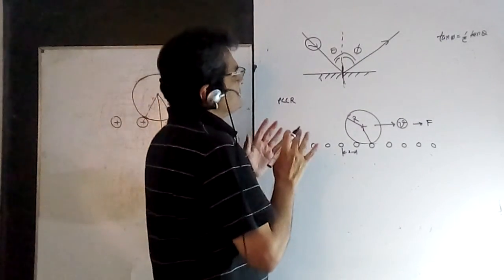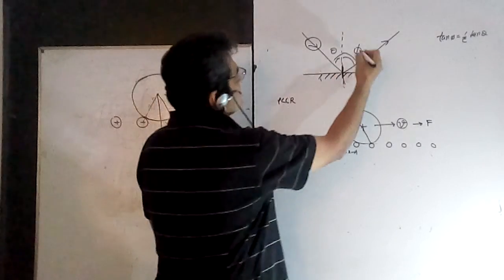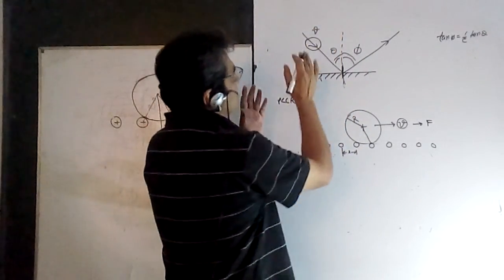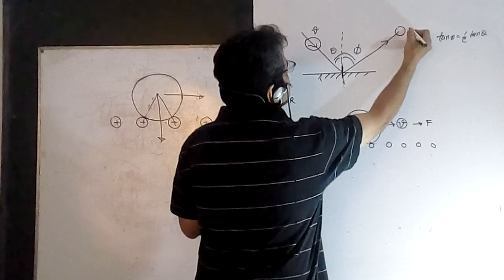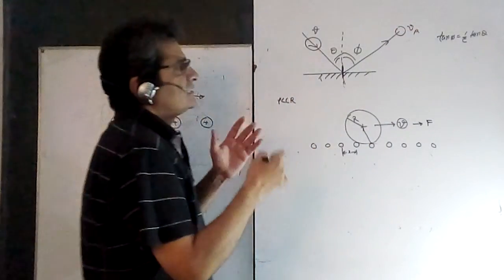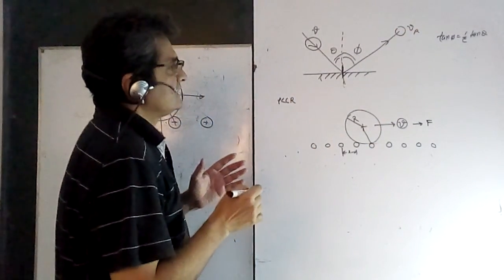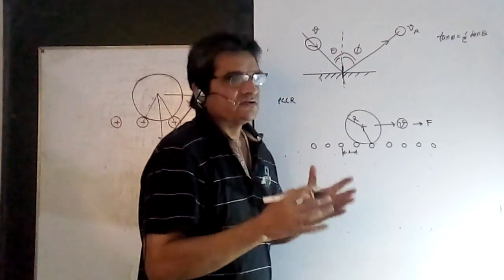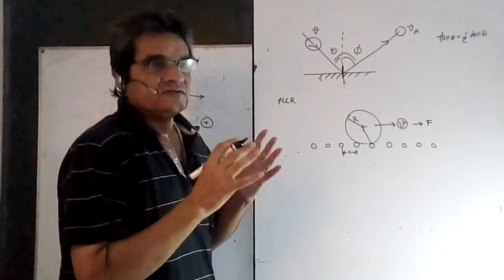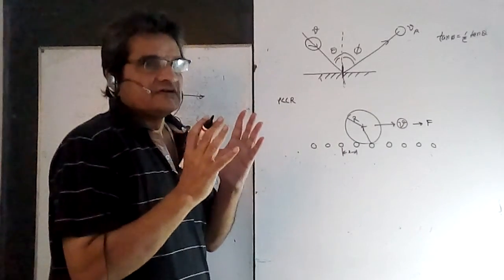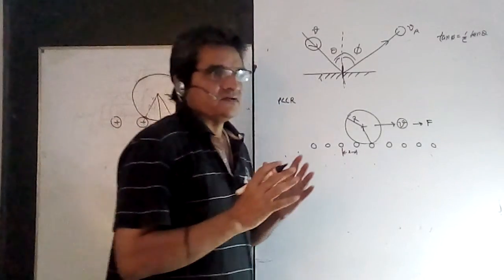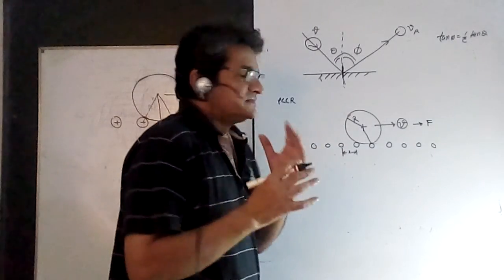What I am trying to show is that when there is an incoming object with velocity v rebounding at a certain angle with velocity v_a, and the coefficient of restitution is not 1, there is a loss of energy. Where is that loss of energy? What is the cause of that loss of energy?